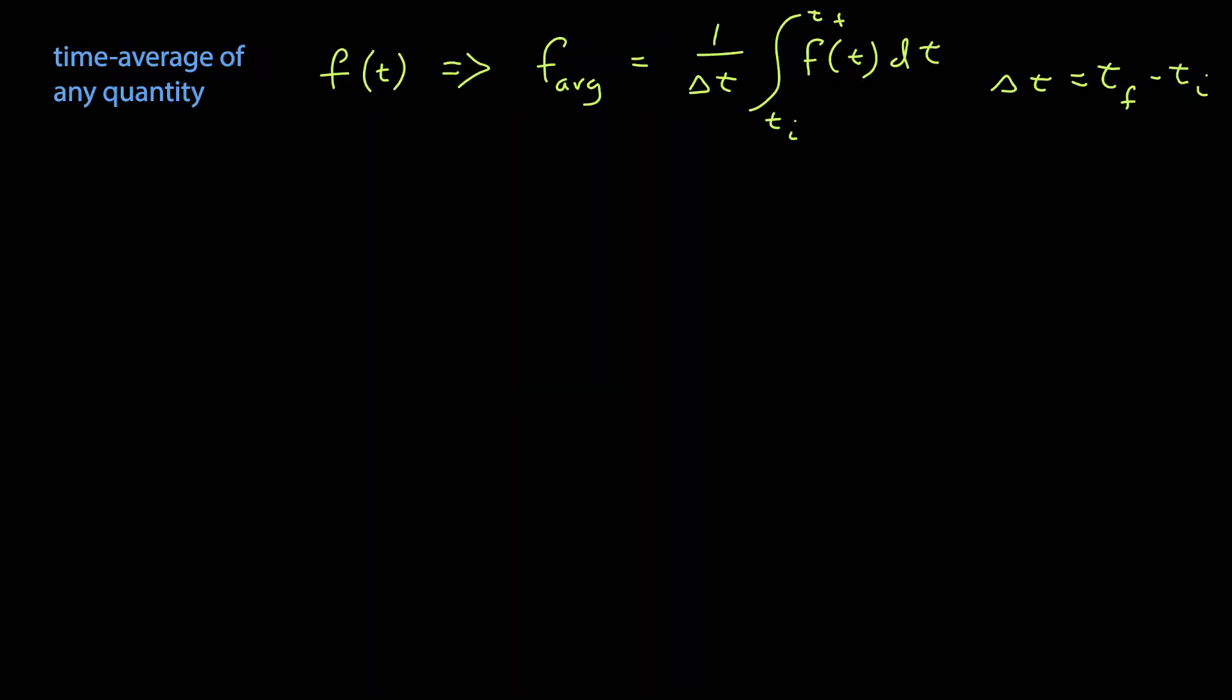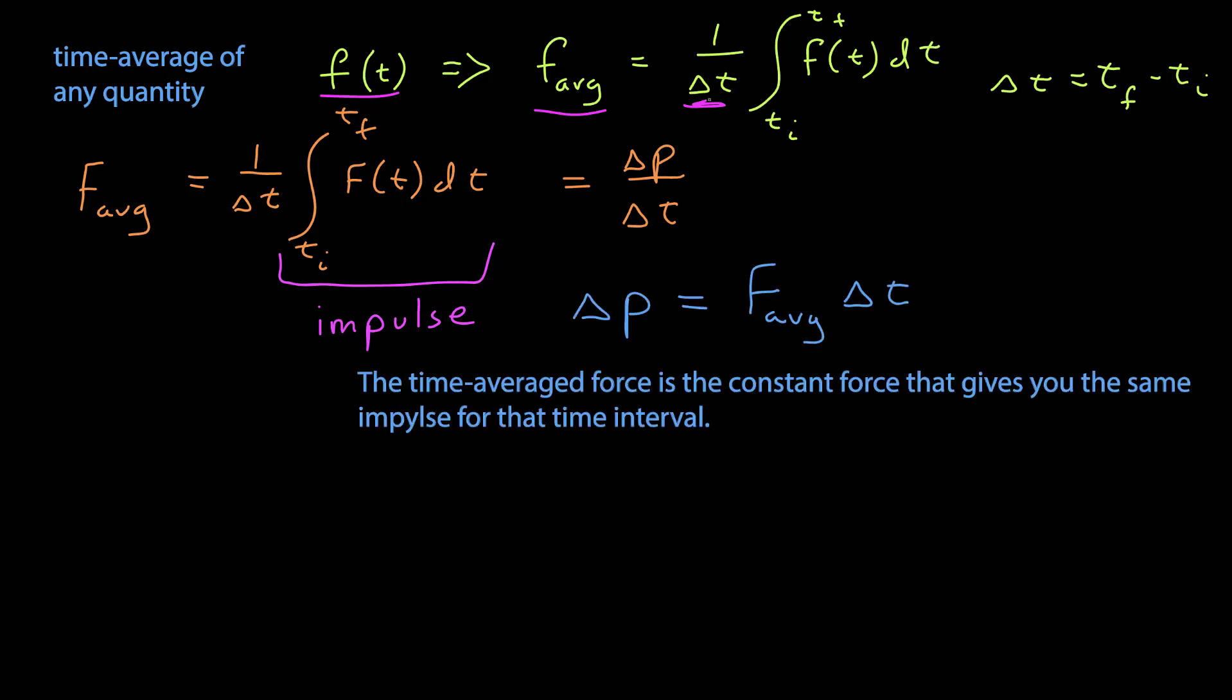Let's look at one other idea. You might remember from calculus, or if not you could look it up in your calculus textbook. If I have any function f of t, I can find its time average by 1 over the time interval delta t times the integral of that function over that time interval. Well that integral is recognizable, so if I want to find the time average of the force, I can evaluate this integral. But of course this integral is the impulse, so if I substitute in delta p, I just have the change in momentum over the change in time. If I rewrite that, I have an expression that looks a lot like what I had before. Delta p is equal to the time average times the time interval. So the time averaged force is the constant force that gives you the same impulse for that time interval.